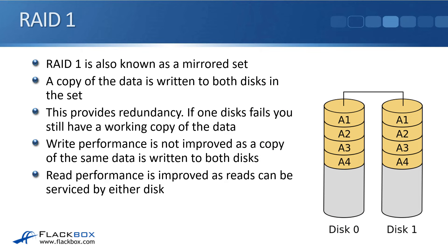The next RAID level we have is RAID 1. So RAID 0 was a Striped set. RAID 1 is a Mirrored set. With RAID 1, a copy of the data is written to both disks in the set. This provides redundancy because you've got two copies of the data. So if one disk fails, you've still got a working copy left. Write performance is not improved as a copy of the same data is written to both disks.